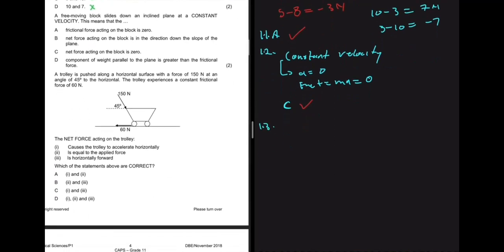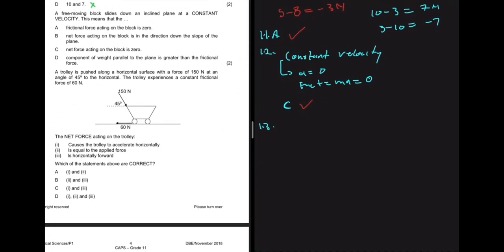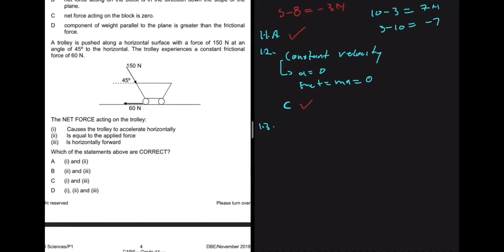Question 1.3 says a trolley is pushed along a horizontal surface with a force of 150 newtons at 45 degrees to the horizontal, experiencing a constant frictional force of 60 newtons. The net force acting on the trolley causes it to accelerate horizontally along the x-axis. That is true.